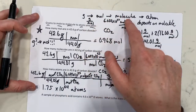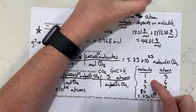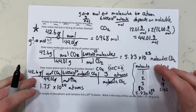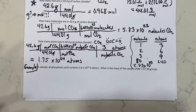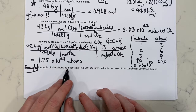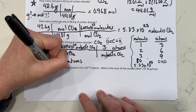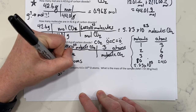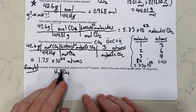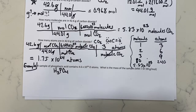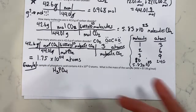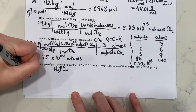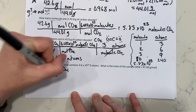You can also go backwards: atom to molecule, molecule to mole, mole to gram. For example: a sample of phosphoric acid contains 4.6 times 10 to the 24 oxygen atoms. Find the mass of the sample. The molar mass is given as 97.99 grams per mole. Starting with 4.6 times 10 to the 24 oxygen atoms, we go from atom to molecule.